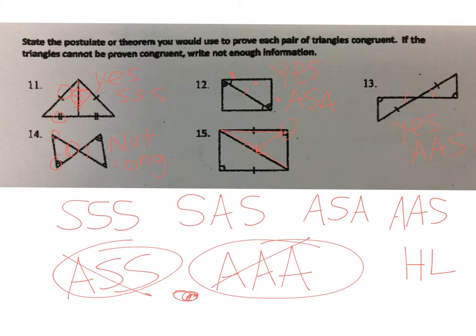Anytime that your hypotenuse is showing congruency between your two triangles and then you have an additional leg, then you can say yes by hypotenuse-leg.